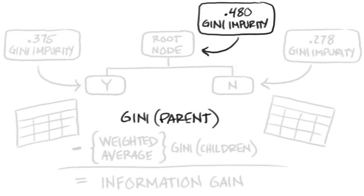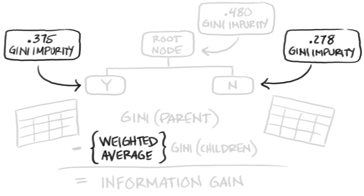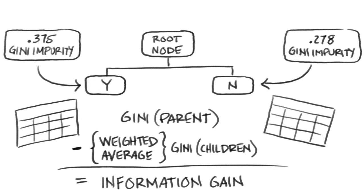We begin by calculating the uncertainty of our starting set, impurity equals 0.48. Then for each question, we segment the data and calculate the uncertainty of the child nodes. We take a weighted average of their uncertainty because we care more about a large set with low uncertainty than a small set with high uncertainty. Then we subtract that from our starting uncertainty and that is our information gain.